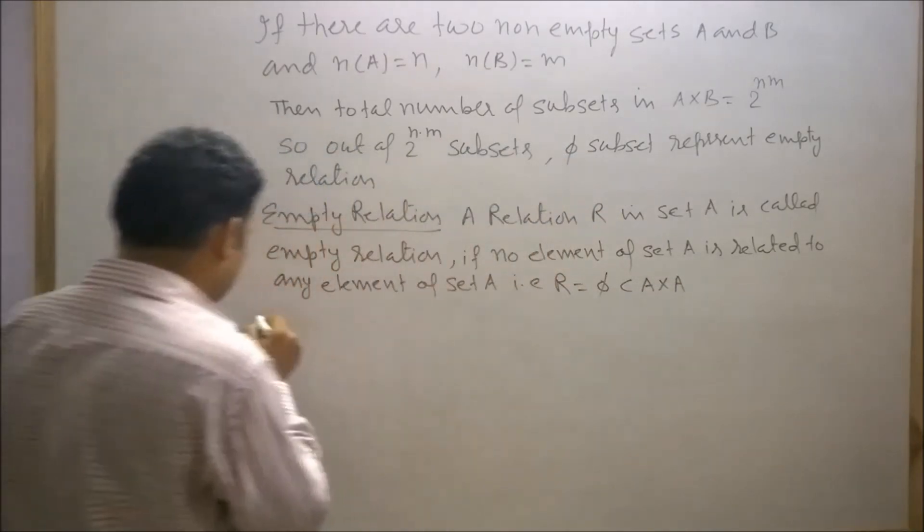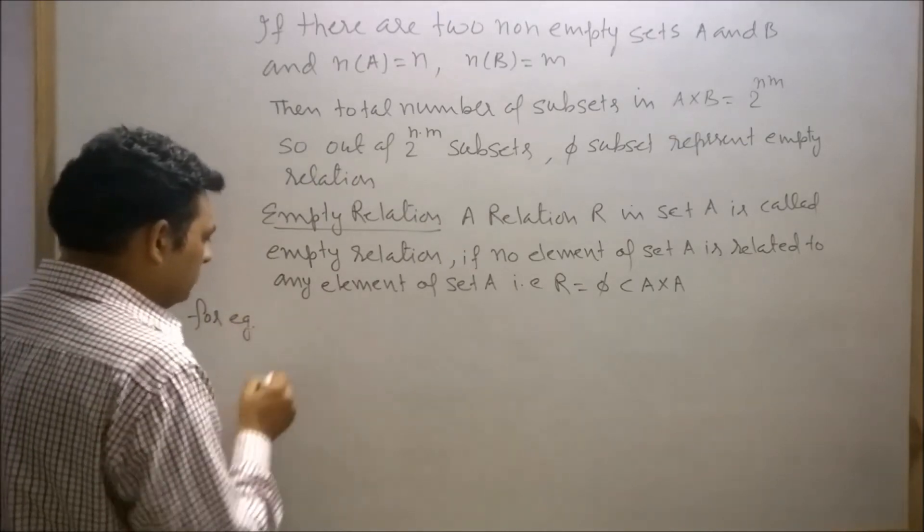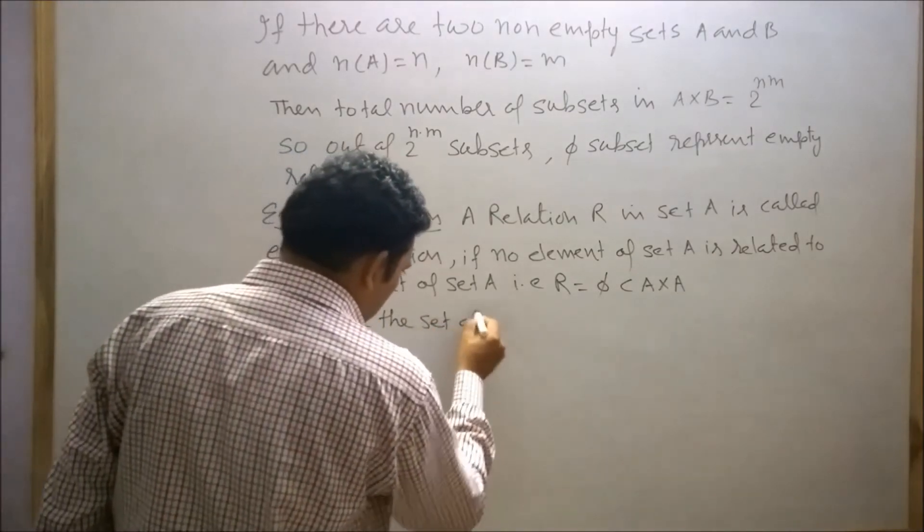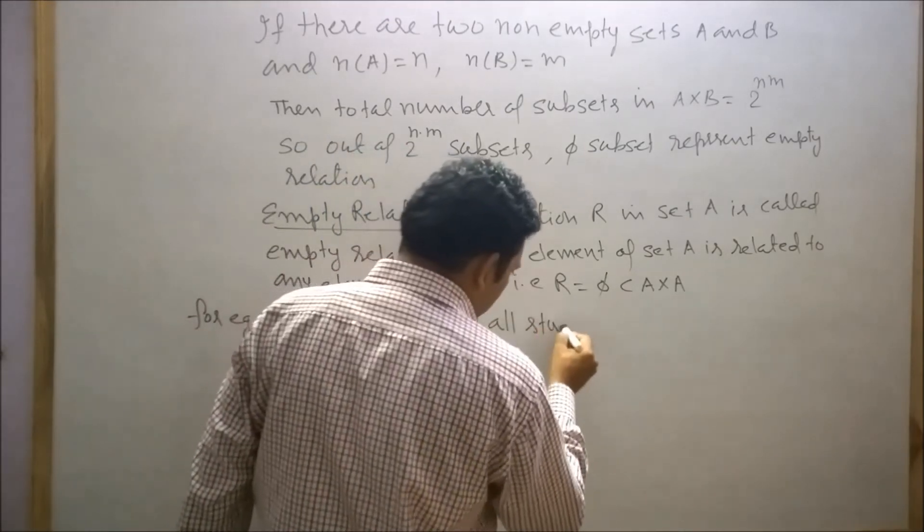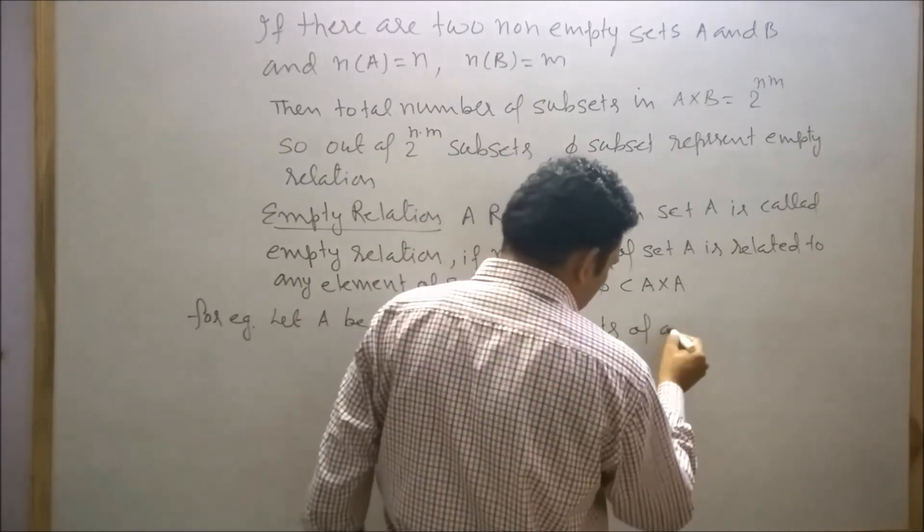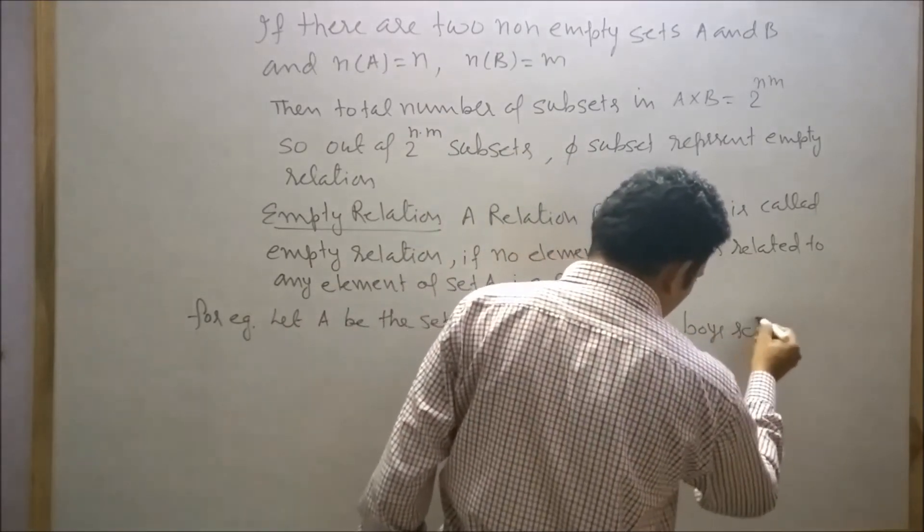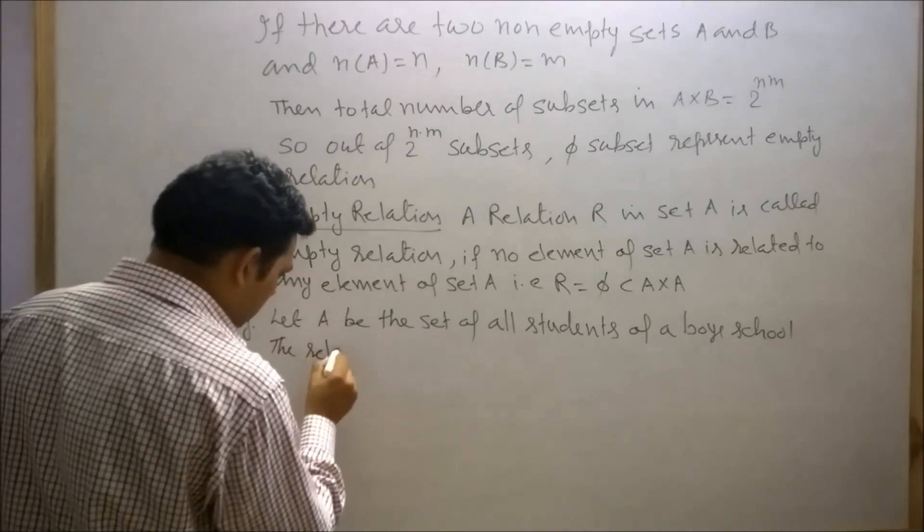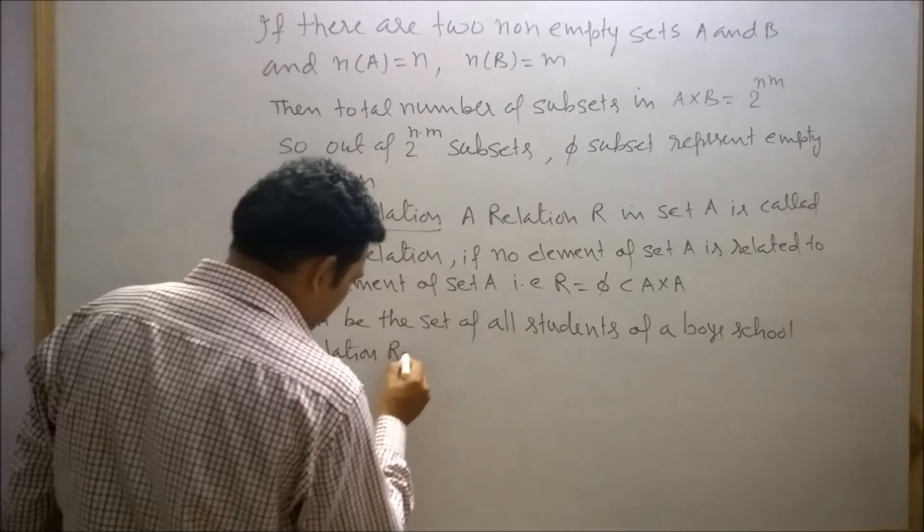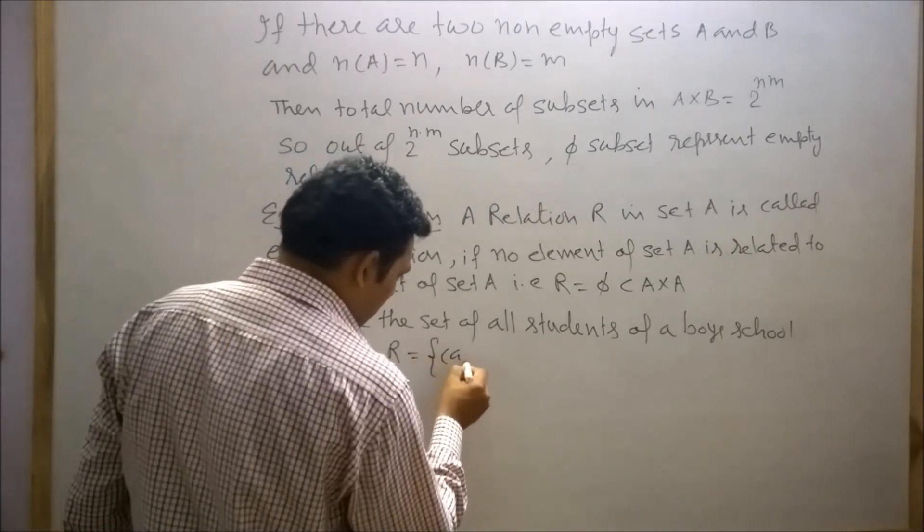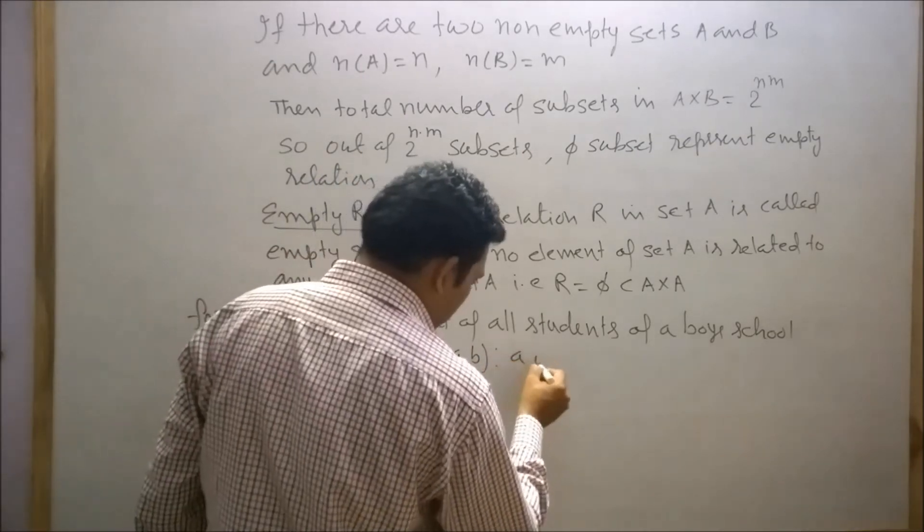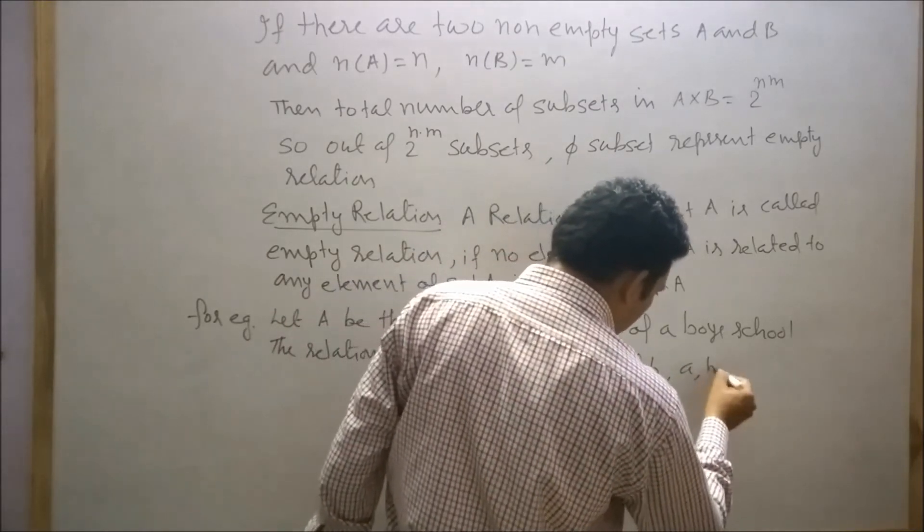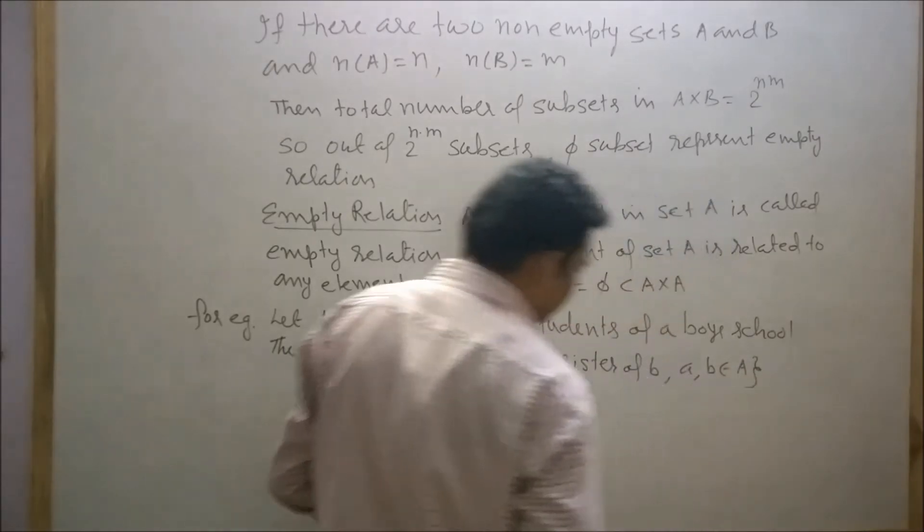For example, let A be the set of all students of a boys school. The relation R is given as (a, b) such that a is sister of b, where a and b belong to set A.